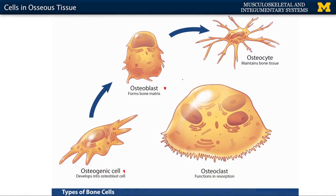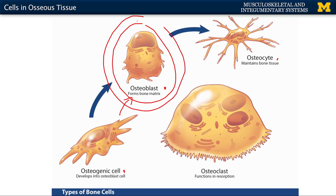The first three cells — osteogenic cells, osteoblasts, and osteocytes — represent the life cycle of one cell type. An osteogenic cell differentiates into an osteoblast, which secretes extracellular matrix until it surrounds itself and can no longer secrete, at which point it becomes an osteocyte. The osteoclast, however, is entirely separate — it forms from the fusion of up to 50 monocytes and has its own distinct life cycle, but is equally important for maintaining healthy bone.